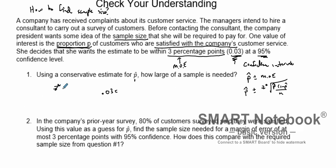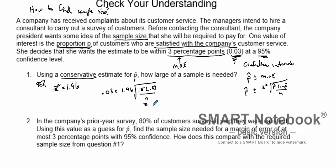We set 0.03 equal to z times the square root of p-hat times (1 minus p-hat) over n. Since we know our critical value at a 95% confidence level is 1.96 — you can find that on charts or use inverse norm — we go 1.96 times the square root of p. Since it says conservative estimate and we don't know our p value, we'll say p-hat equals 0.5, so 1 minus 0.5 is also 0.5, all divided by n. We then solve for n using algebra.